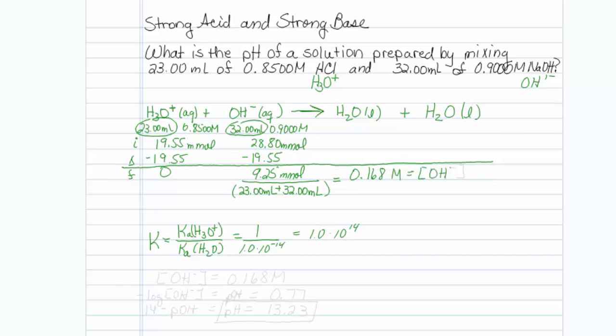So hopefully you know what to do at this point. My hydroxide concentration is 0.168 molar. So the negative log of the hydroxide, which will give me the pOH, pOH, let me get the O in there,